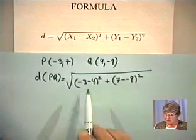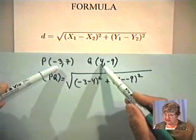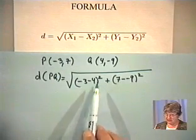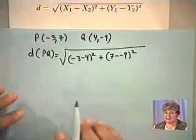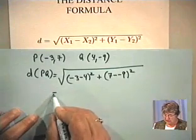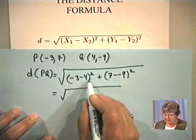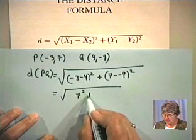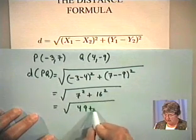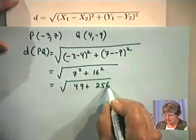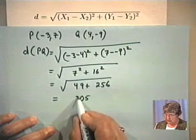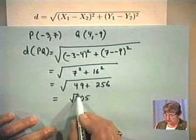It doesn't make any difference if you start out with 4 minus negative 3, because you're going to end up with 7. Order doesn't make any difference in the distance formula — remember, it makes a difference in the slope formula, but not in the distance formula. So this distance is going to be negative 3 minus 4 equals negative 7, squared is 49; and 7 minus negative 9 equals 16, squared is 256. So we end up with the square root of 305.